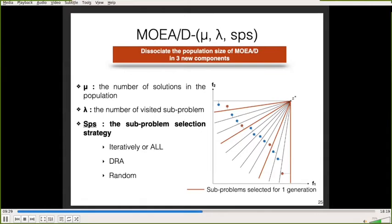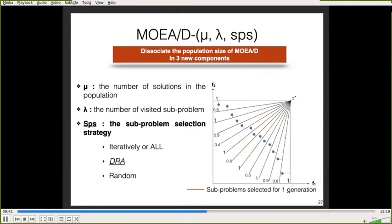The first SPS strategy is the classic MOEAD strategy where we visit all subproblems. The second strategy is from MOEAD DRA, where we use a priority function to prioritize each subproblem, then execute a tournament selection to choose the lambda subproblems. The third strategy is random, where we choose our lambda subproblems randomly.